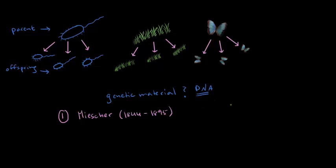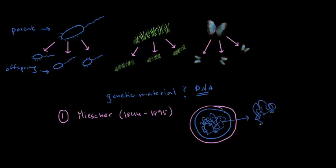Meischer worked with cells that he took out of pus, and today we know that these are lymphocytes, and lymphocytes happen to have very large nuclei. So if that's the cell, the nucleus might look something like that, and of course there's this material inside the nucleus. Because the nuclei are so large, Meischer was able to isolate the material inside the nucleus and he analyzed this material.